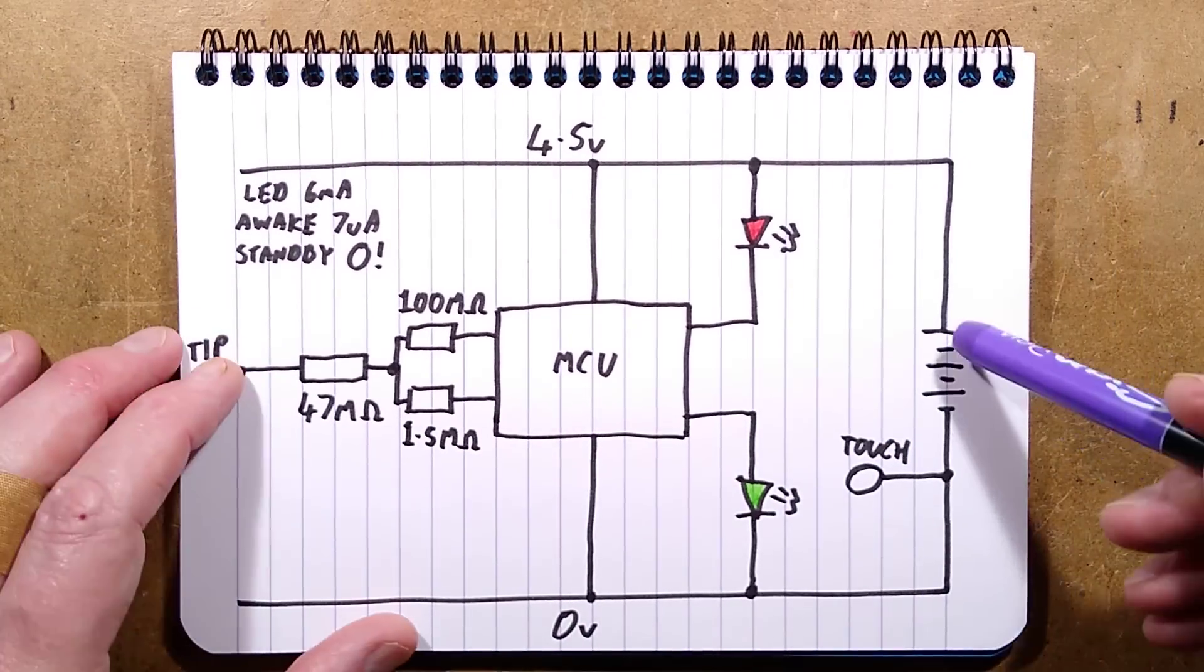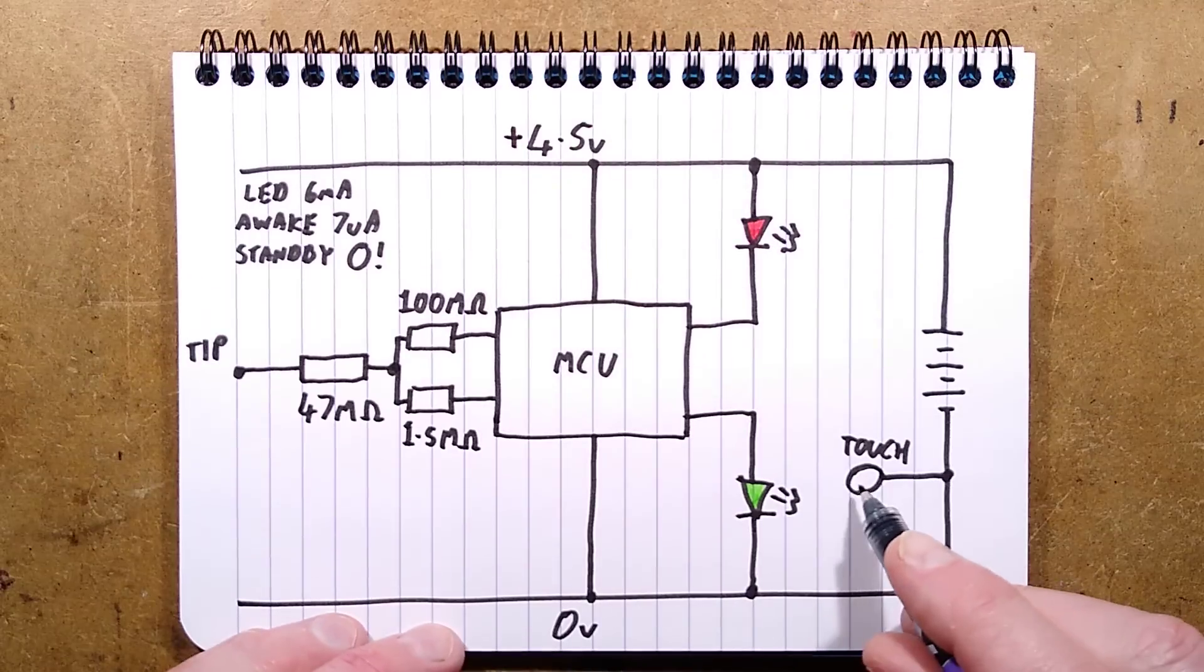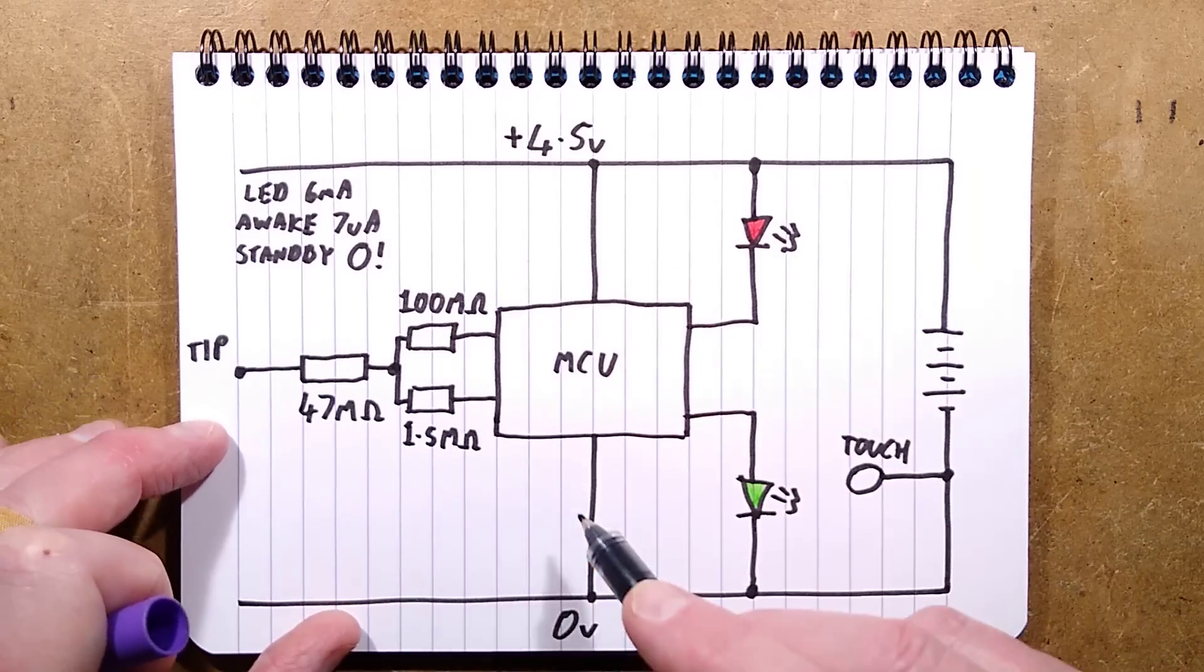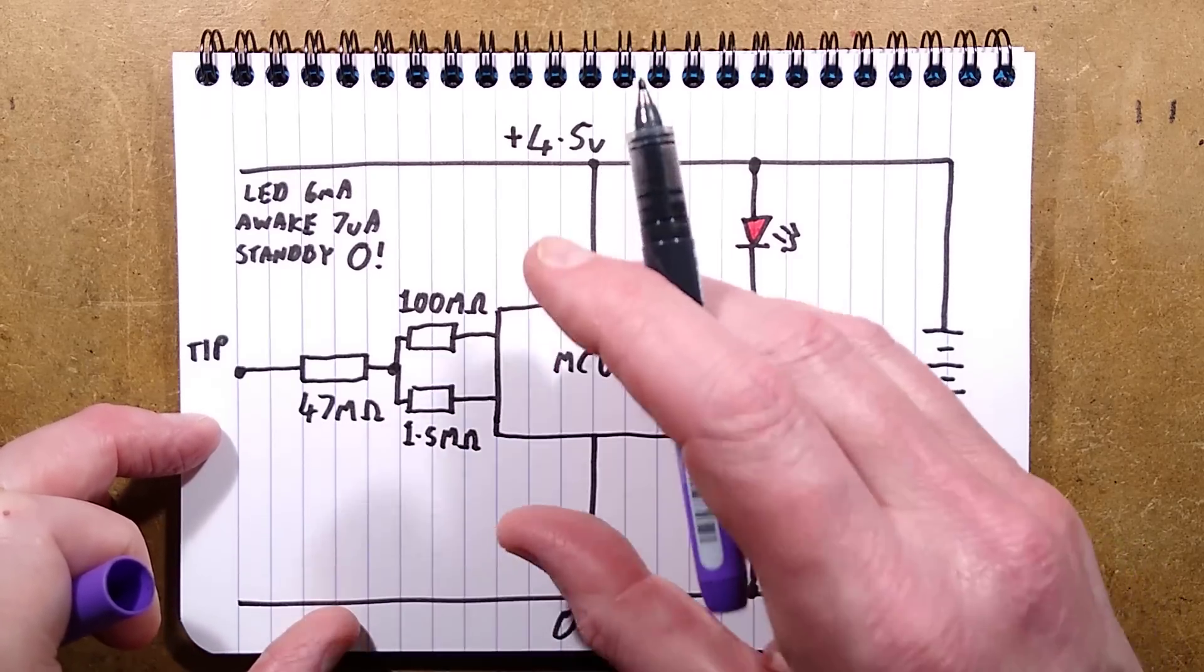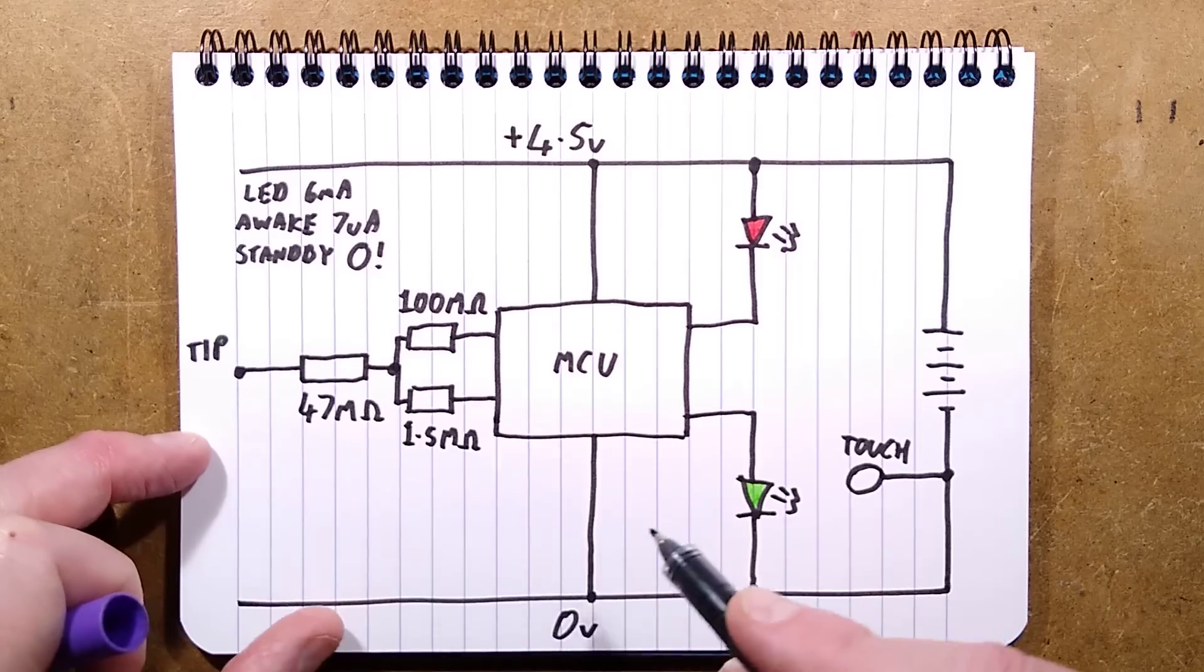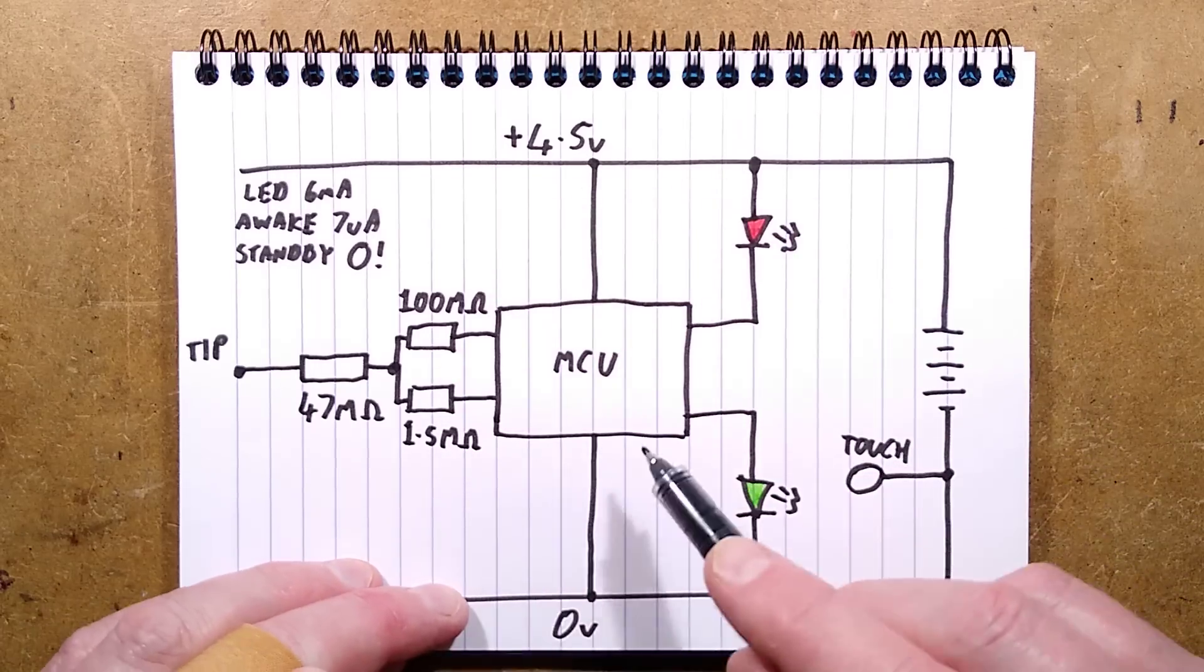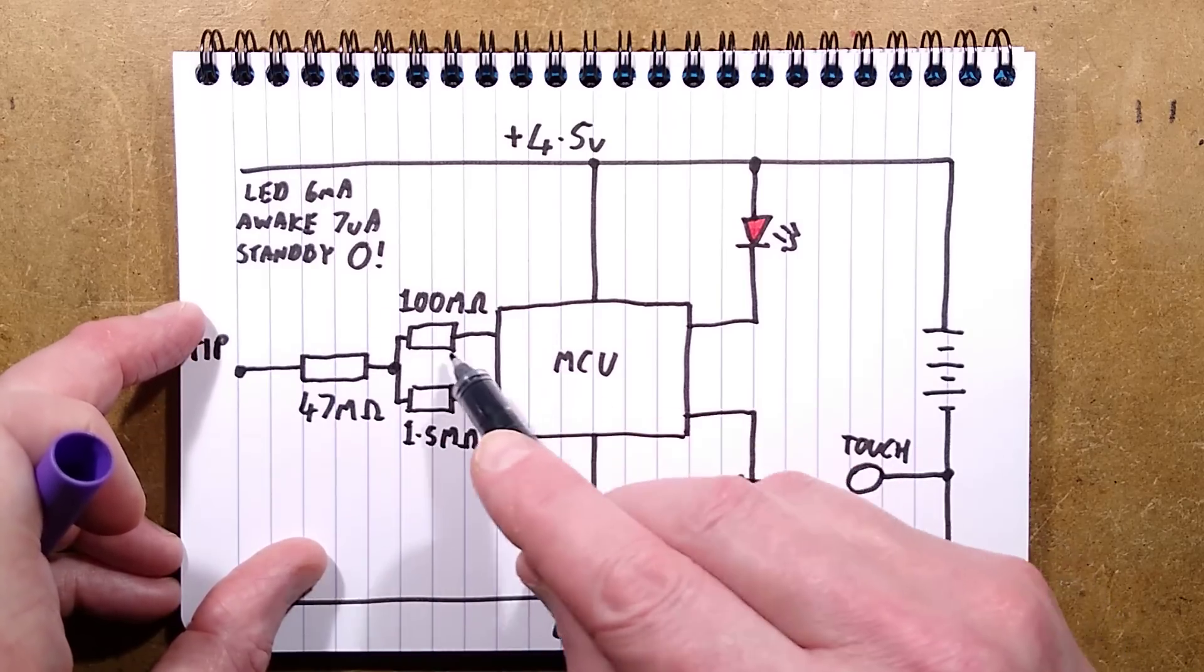But here's the schematic. We've got the three cells creating a 4.5 volt battery. In this instance, the touch sensor is actually going to the 0 volt rail, which means that the chip in here will be pulling these up to this positive rail with that weak internal pull up, which I think these resistors have been chosen to be able to defeat that pull up when the current is high enough. 47 megohm resistor and then splitting out into that huge 100 megohm and the smaller 1.5 megohm. So the 1.5 megohm will be the high sensitivity input and it will just easily defeat that pull up resistor.